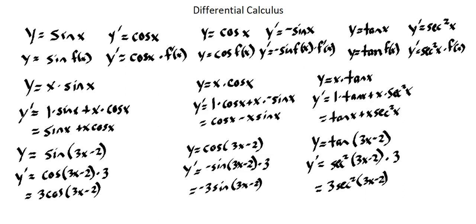So these are six examples of differentiating trigonometric functions. We've looked at sine, cosine, and tangent. We haven't differentiated cosecant, secant, and cotangent, but you can research those on your own. Be sure to work through practice problems from your textbook relating to differentiating trigonometric functions. I look forward to seeing you in our next lesson.